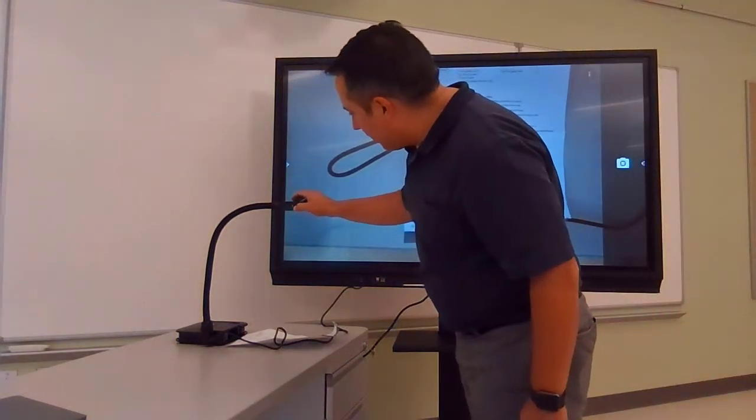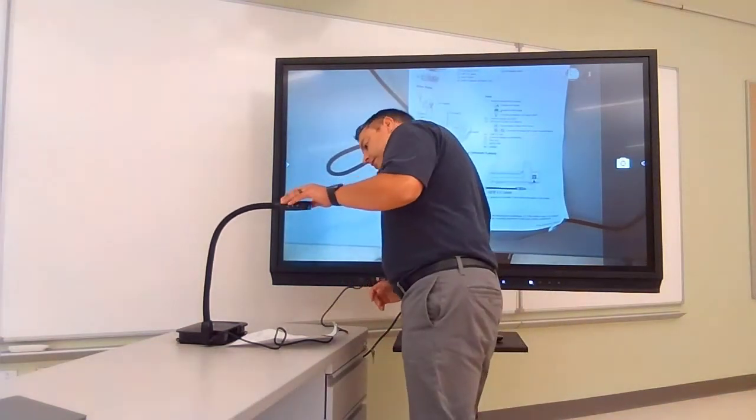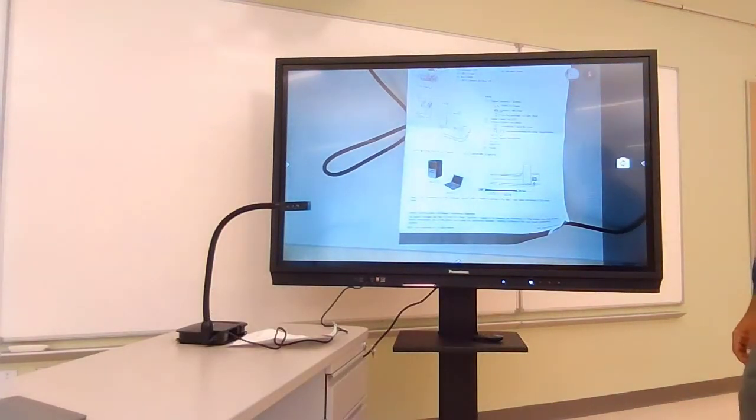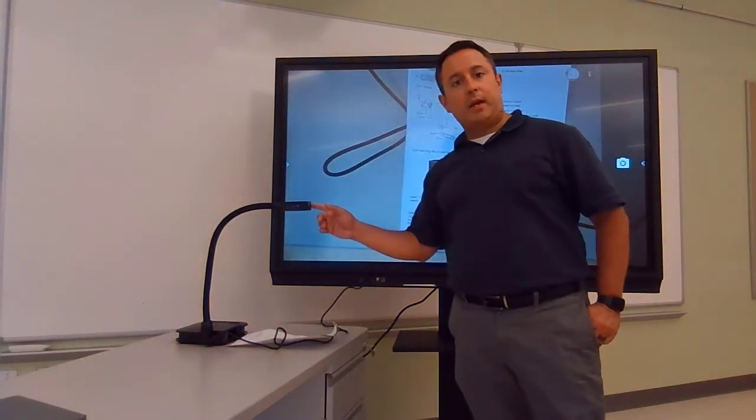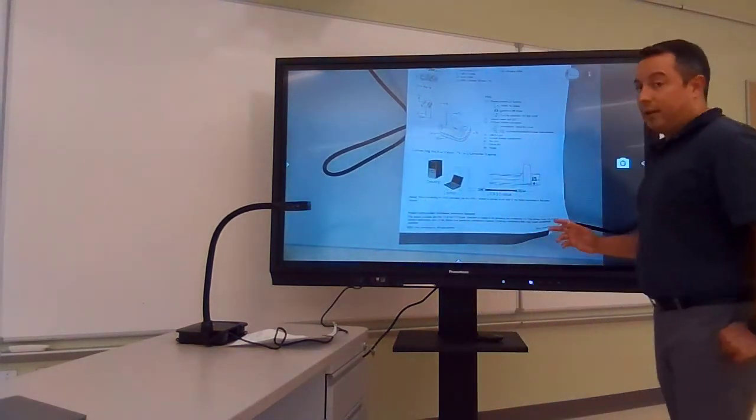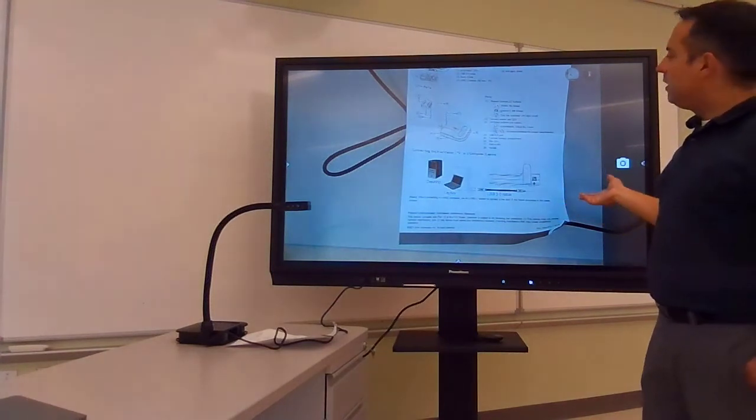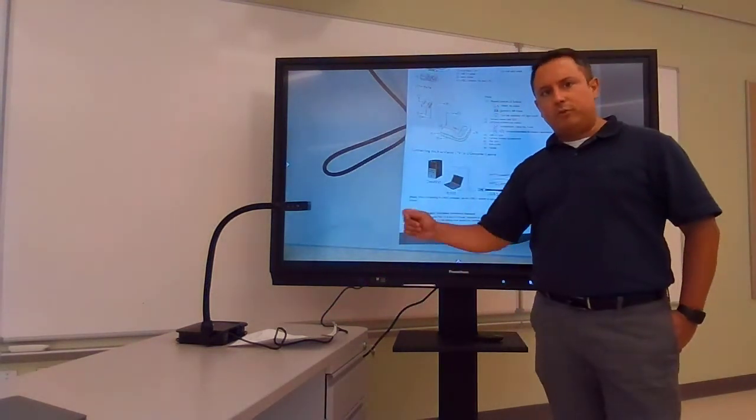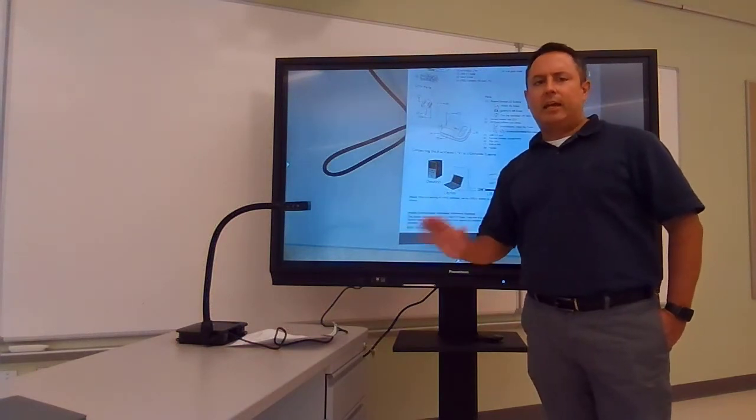I'm going to put that same piece of paper underneath it and we're going to see if that is facing the right way, and it appears that it is. Now it's not super clear, so I'm going to try and fix that. What I did is I hit the AF button on the document camera - that stands for autofocus. You are going to see that the picture cleared up a little bit.